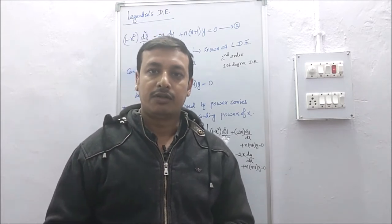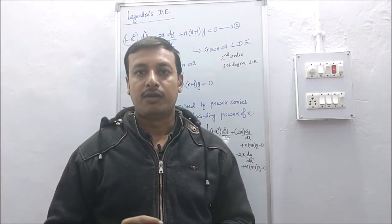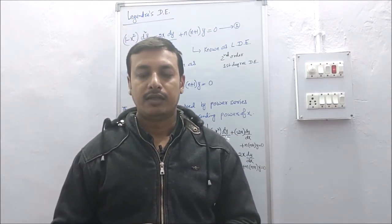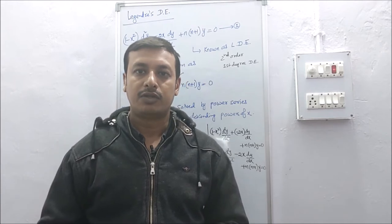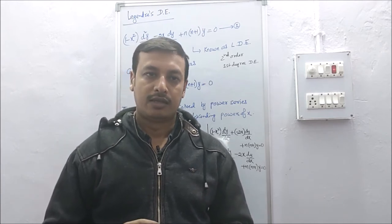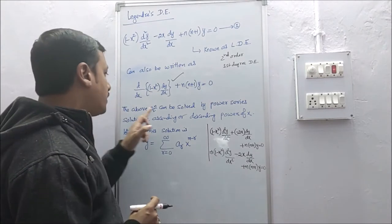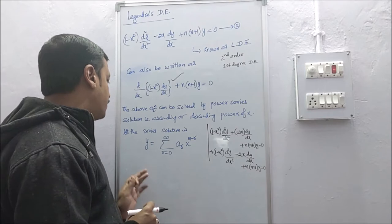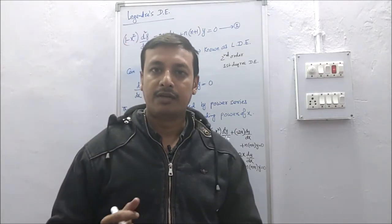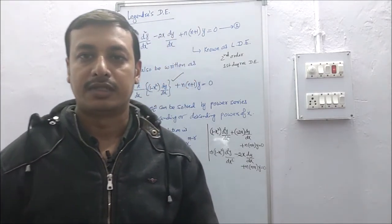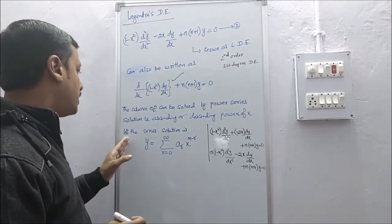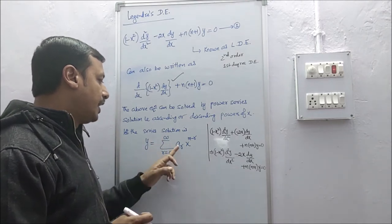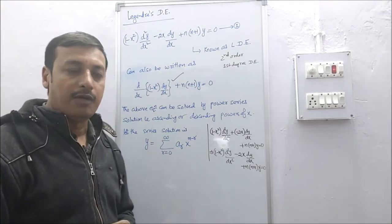We have to solve equation number 1. This equation can be solved by the power series solution, that is, in ascending or descending powers of x. Let the series solution be y equals summation from r equals 0 to infinity of a_r times x to the power (m minus r).